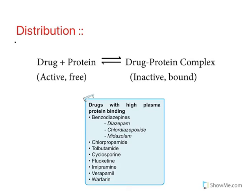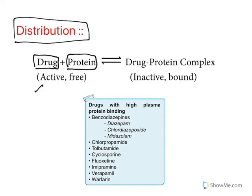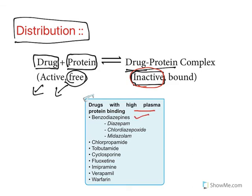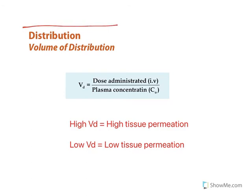Moving to distribution: once drug gets into plasma, it can bind to plasma proteins or remain unbound. Unbound free drug is active. When the drug binds to a protein complex it becomes inactive. Drug can only show its action in active free form. Protein-bound drug stays longer in plasma and the half-life is delayed. Drugs with high plasma protein binding include benzodiazepines, chlorpropamide, tolbutamide, cyclosporine, fluoxetine, imipramine, verapamil, and warfarin.